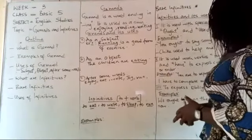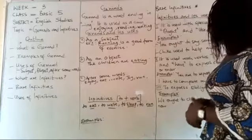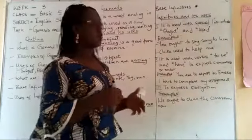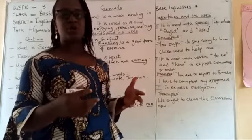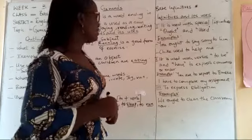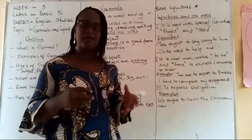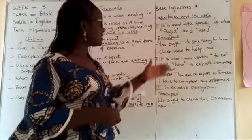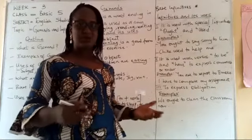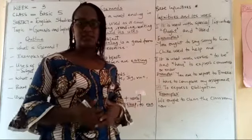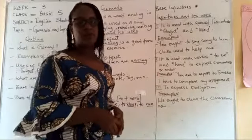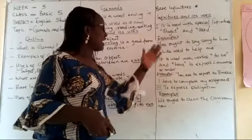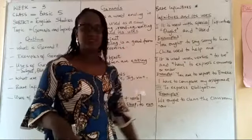Talking about uses of infinitives — we use them to show obligation, and we could also use them to express commands. We have special infinitives: 'ought to' and 'used to'. For example: 'You ought to do this.' 'I used to have mommy at home.' 'You ought to be in school by now.' You ought to say sorry to him — this is what you are expected to do, not a command.